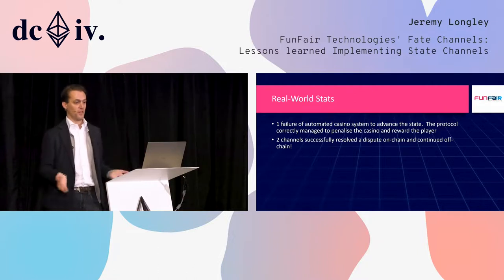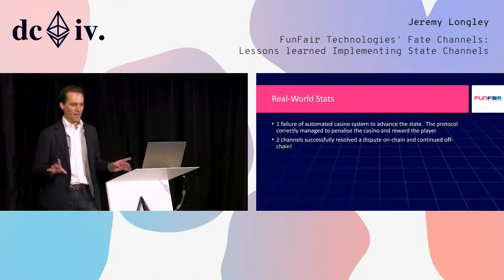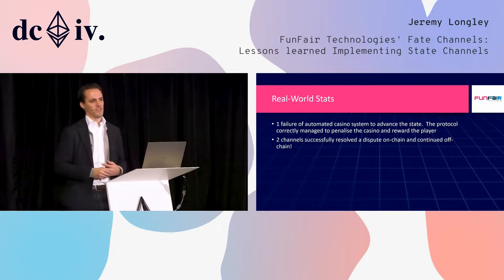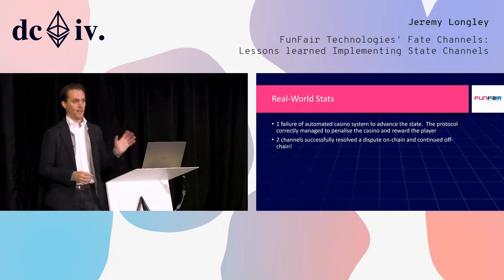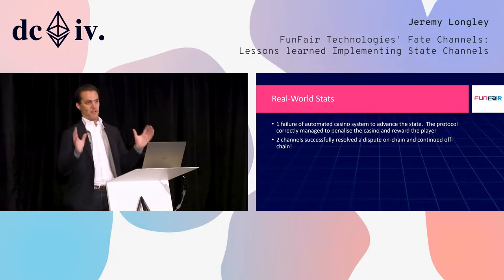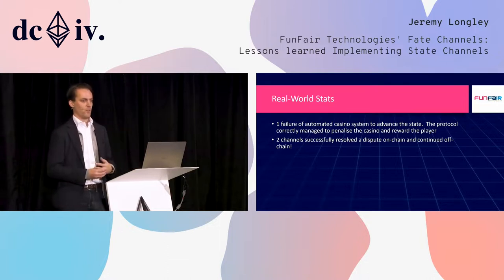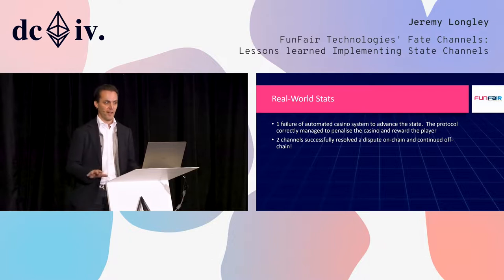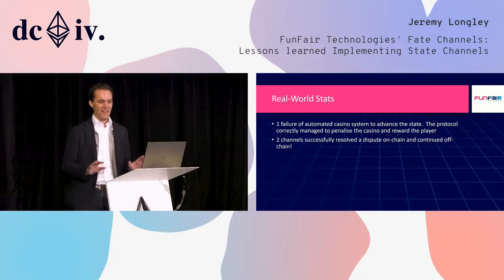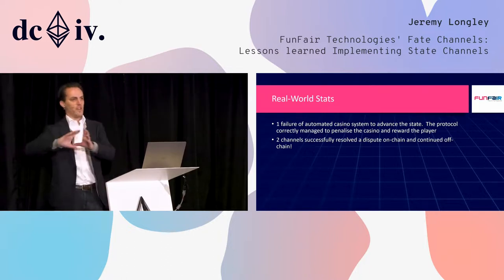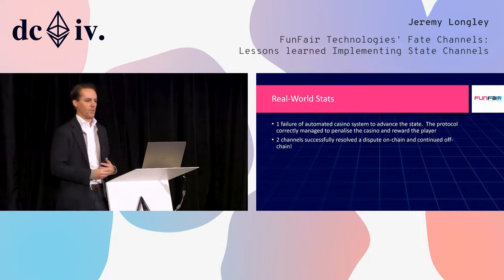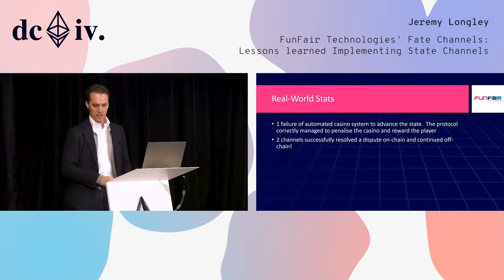We've had one failure of our automated casino system to correctly advance the state — that's a bug, but the protocol worked. The player raised the dispute, claimed it, got paid, and the casino was penalised. This is the system doing what it's supposed to do. We also had two channels that actually had a dispute, resolved it on-chain, came back off-chain, and continued. That's something I'm very, very proud of — and it worked.